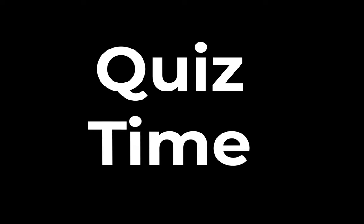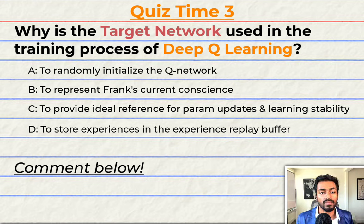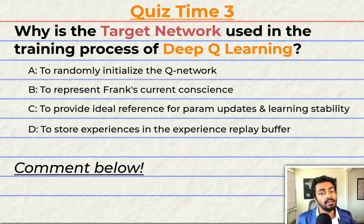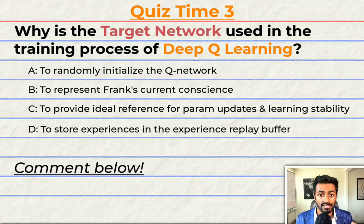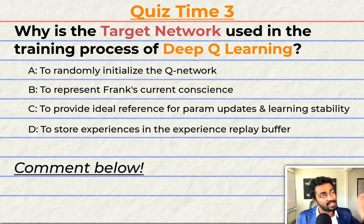Quiz time! Have you been paying attention? Why is the target network used in the training process of deep Q-learning? A: to randomly initialize the Q-network. B: to represent Frank's current conscience. C: to provide an ideal reference for parameter updates and improve learning stability. Or D: to store experiences in the experience replay buffer. Comment your answer down below and let's have a discussion.